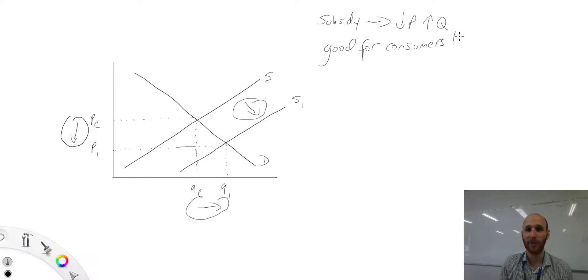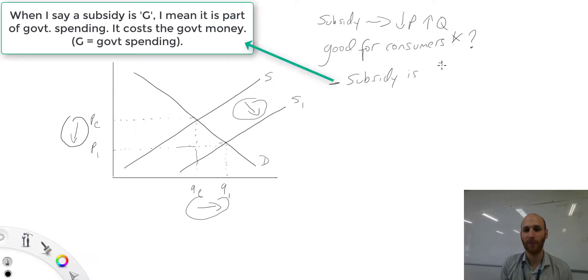But I might not put that and might say a question mark. And the reason that I say this is because subsidy is G - it's a cost to government.